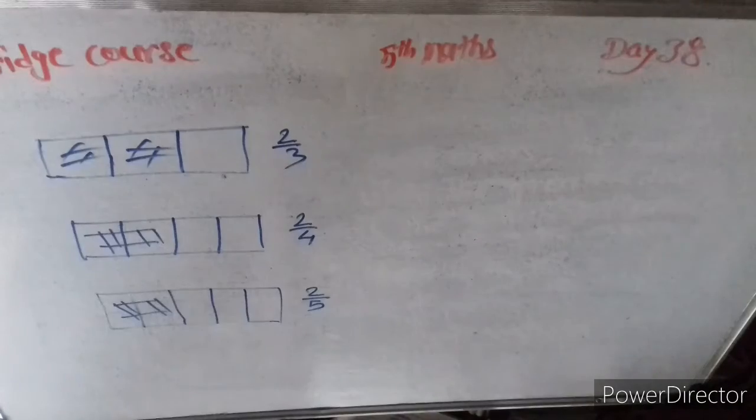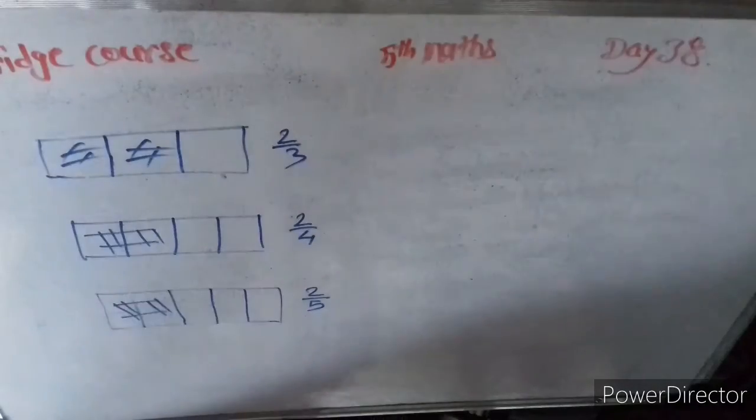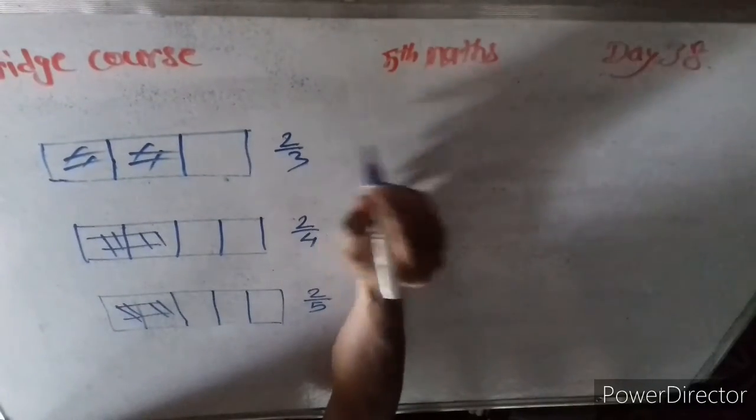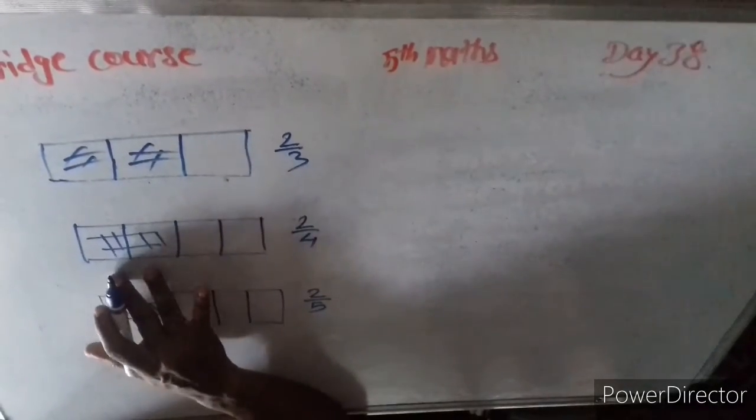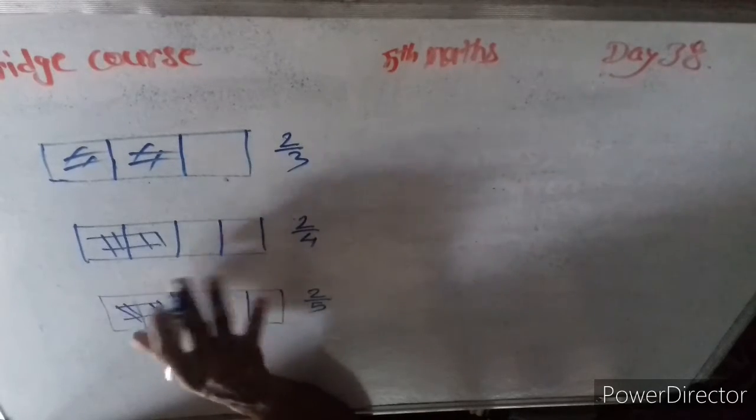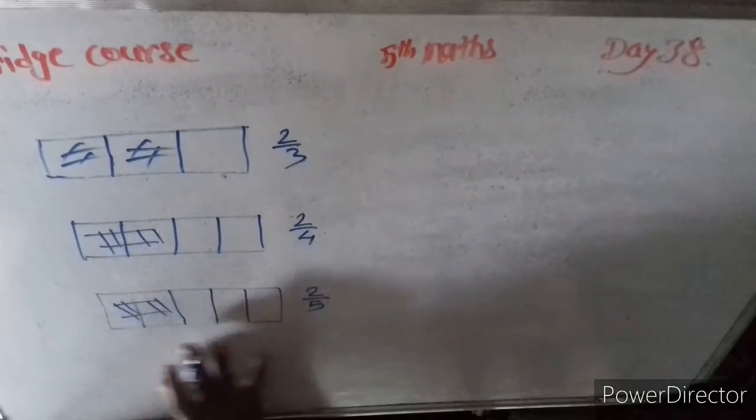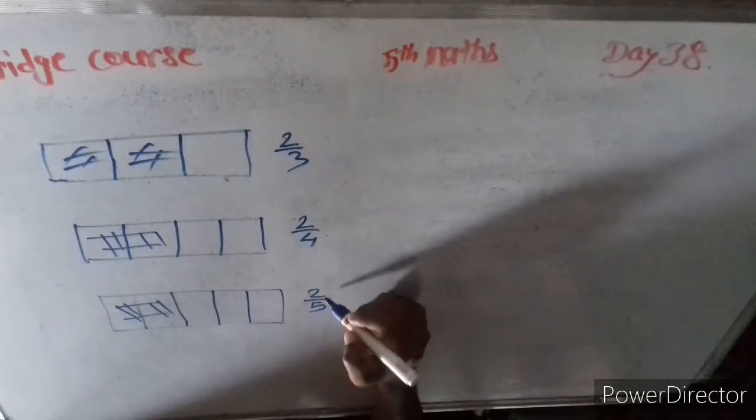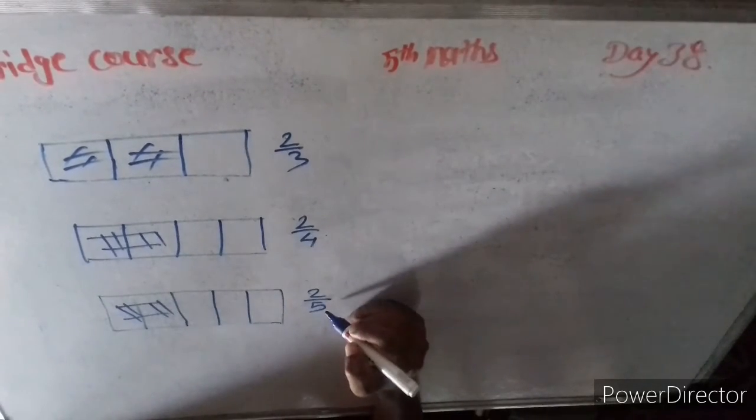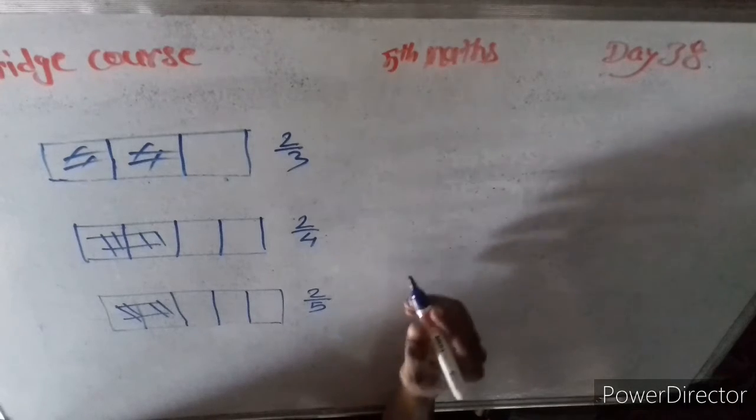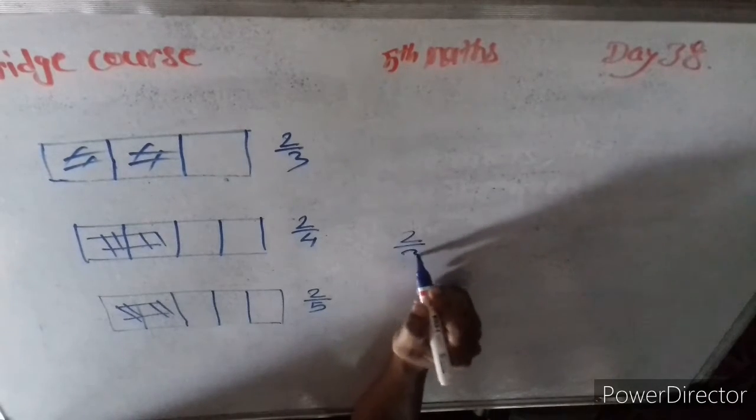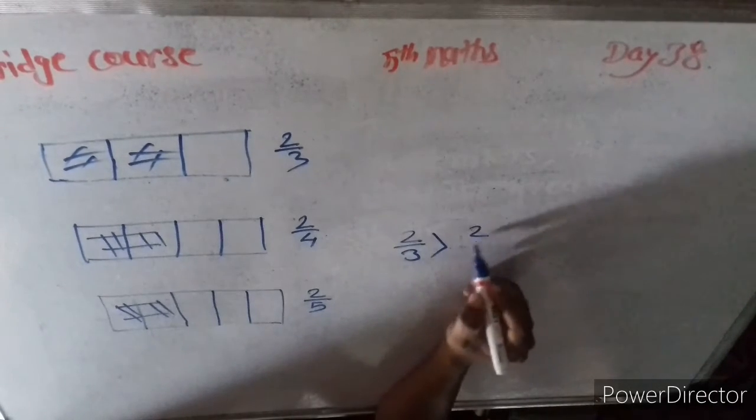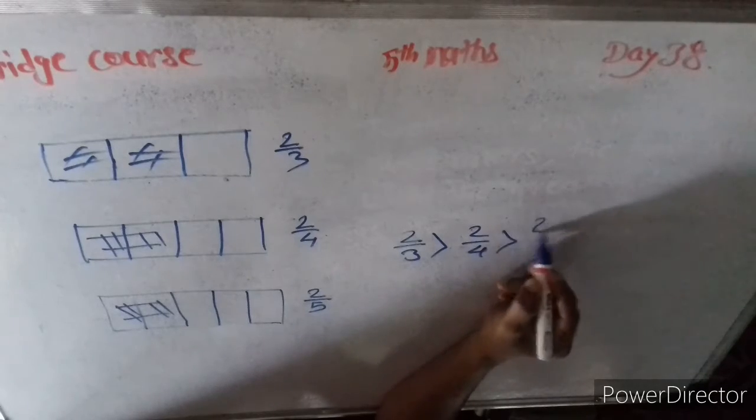Now look again. The first three parts, two colored. Second four parts, two colored. Fifth part, two colored. That time numerator is same, denominators are different. The greater denominator is the smaller. Two by three biggest than two by four, biggest than two by five.